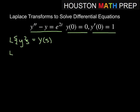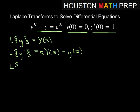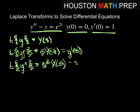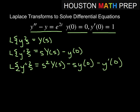When we did the first derivative, the Laplace transform of y prime gave us s times Y of s minus y of 0. And the Laplace transform of the second derivative, y double prime, would be s squared times Y of s minus s times y of 0 minus y prime of 0. So we have all that information, and that helps us take care of the left-hand side of the equation.